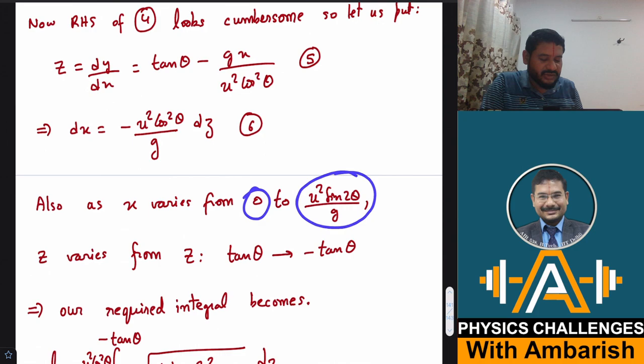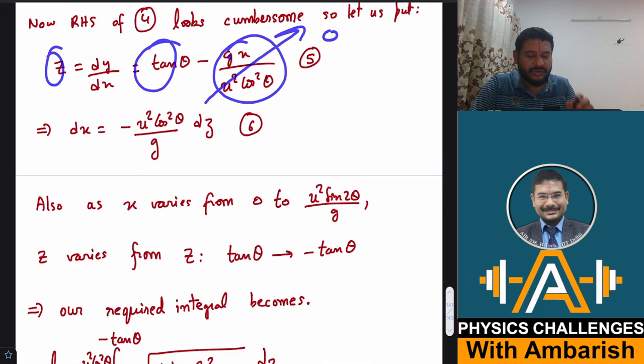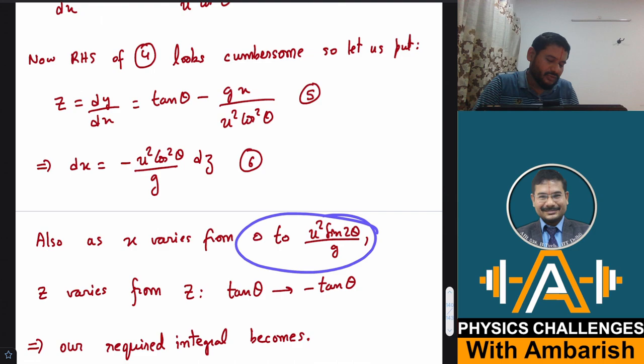So x was supposed to vary from 0 to the range that is u square sin 2 theta by g and correspondingly we can find the limits of z. So when x is 0 of course z is what? So when x is 0 you see you put x equal to 0 then z happens to be only tan theta because this term goes to 0. And when x is u square sin 2 theta by g you can verify that this will become minus tan theta. So z corresponding to x varying from 0 to range, z varies from tan theta to minus tan theta. We could also say that directly because z is nothing but dy by dx and the slope initially is tan theta and the final slope is minus tan theta. So we could say that directly also.